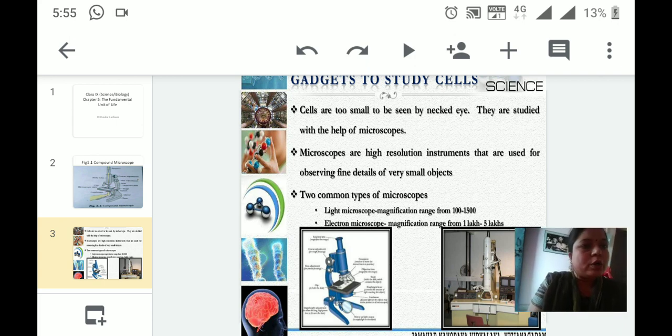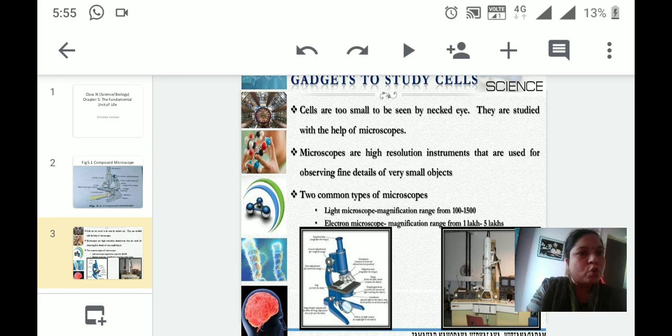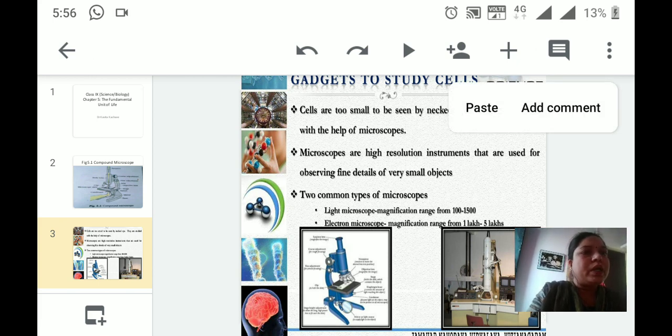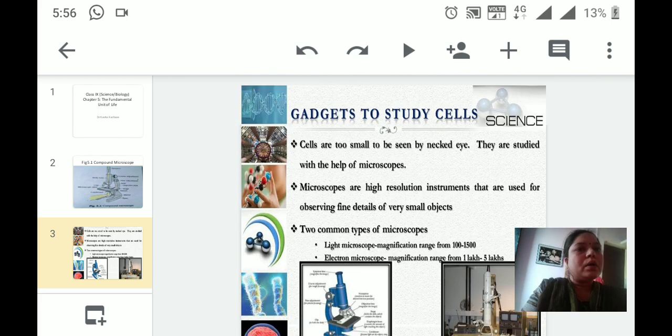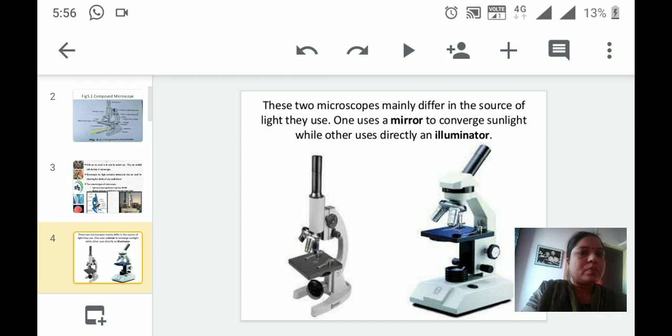Each microscope has its own specialty. Compound microscope can magnify the range of a specimen by 10 times to 100 times its original size. Light microscope can magnify the image in the range of 10 to 1500 times more. Electronic microscope can magnify the image in the range of 1 lakh to 5 lakh times more. You can see here two microscopes are given.